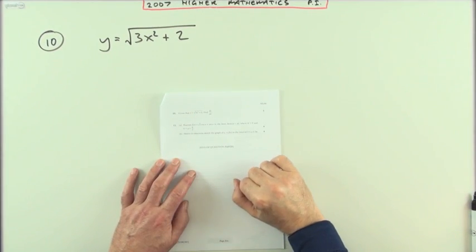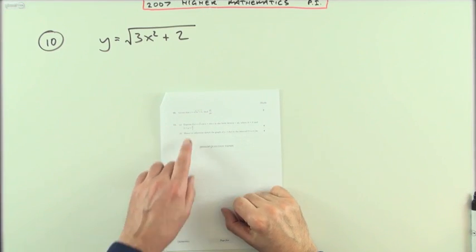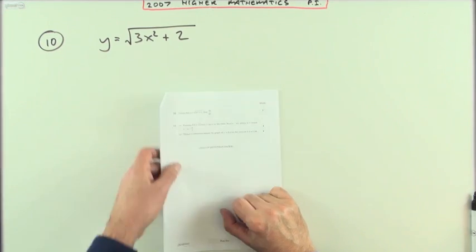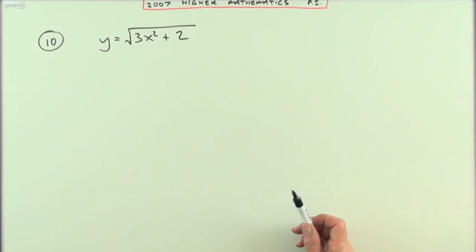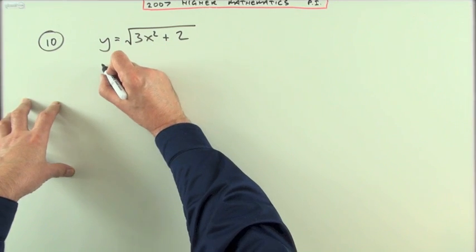Number 10 from the 2007 Higher Maths Paper 1, short question, three marks. Here we've got a function of a function. It'll be the chain rule you're using here. It's best to think of it as a function of a function.